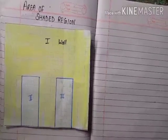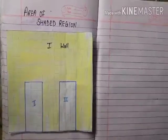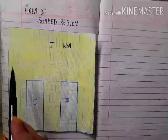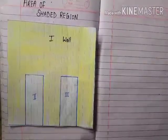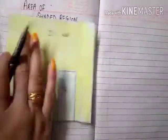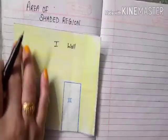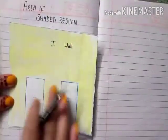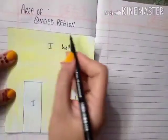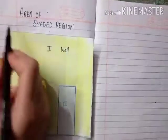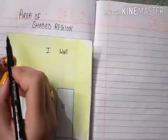We will find out the area of the shaded region. Let us suppose this is a wall and this is the painted area, and we have to find out the area of this wall — specifically the area where the paint is done. So firstly, let us find out the length of the wall. I have just taken a rough dummy of the wall.